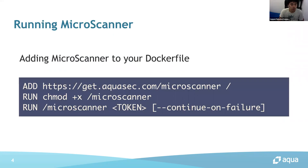This is how you can use Microscanner. You can add Microscanner to your Dockerfile. First, you have to install Microscanner and change the mode permission. And finally, just run Microscanner with a token. If your image has a vulnerability, the Docker build will fail.